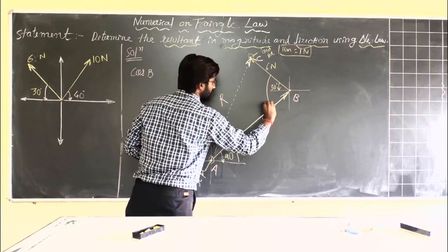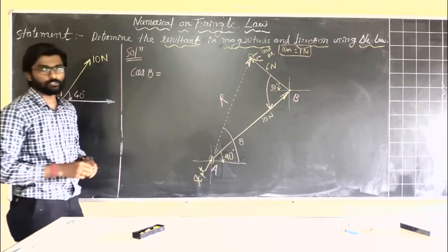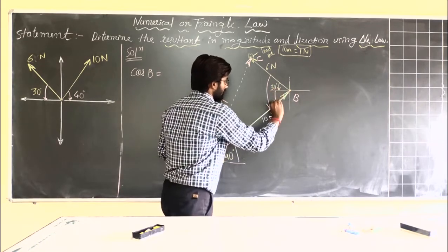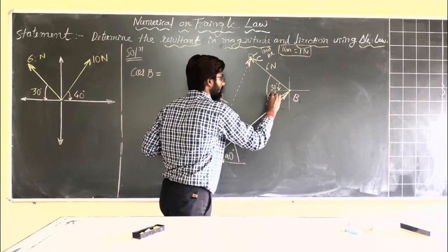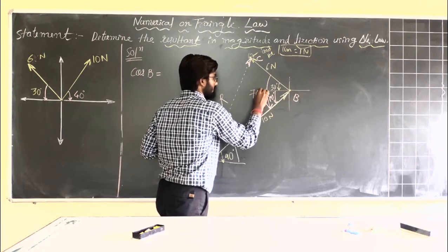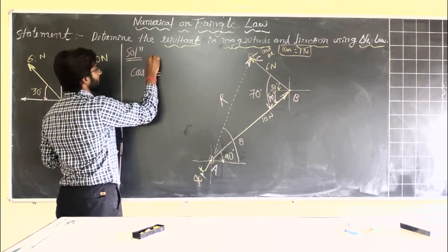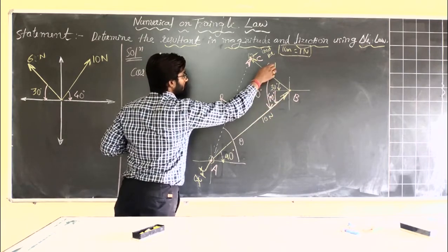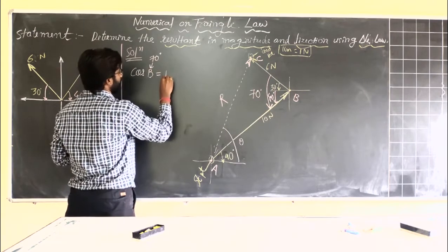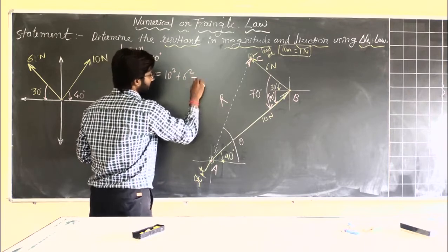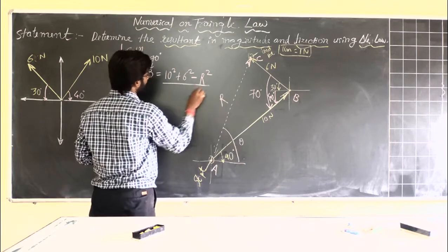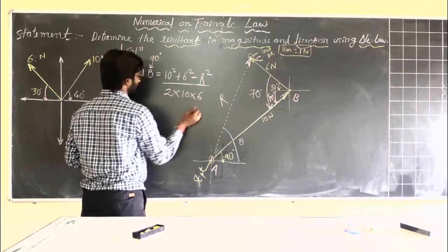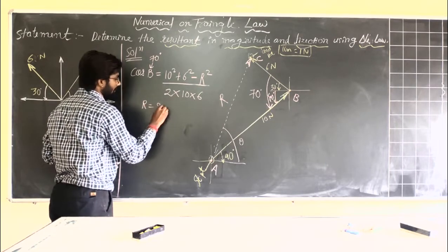The cosine rule: cos B equals (sum of squares of adjacent sides minus the square of the opposite side) divided by (2 times the product of the adjacent sides). The angle B is between the 6 newton and 10 newton forces. Since one force is at 40 degrees and the other at 30 degrees, the total angle at B is 30 + 40 = 70 degrees. So cos(70°) = (10² + 6² − R²) / (2 × 10 × 6). Solving this gives the resultant R as 9.74 newton.